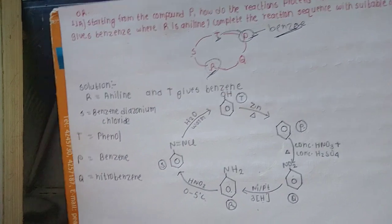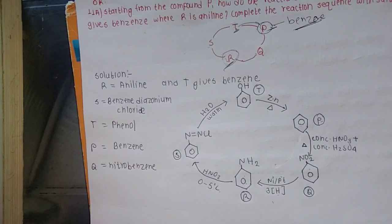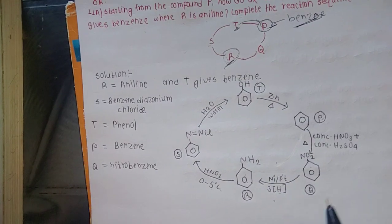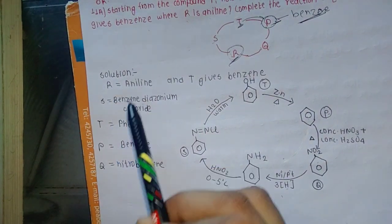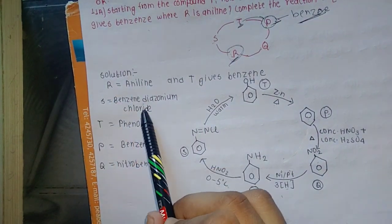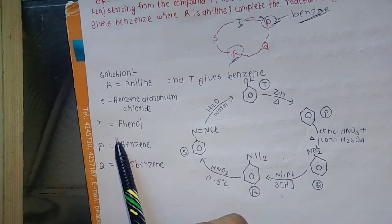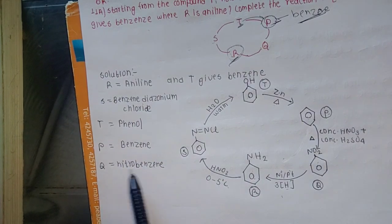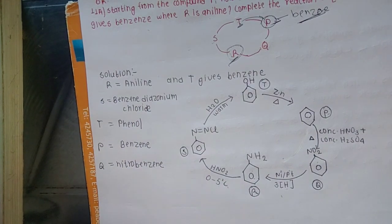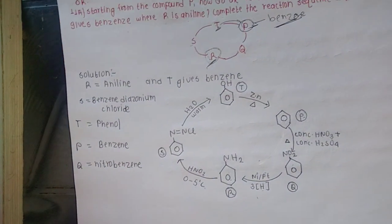So we can solve this question. The last part of the sequence is R, S, T. The full sequence is P (benzene) → Q → R (aniline) → S → T, and we can also identify nitrobenzene in this reaction sequence.